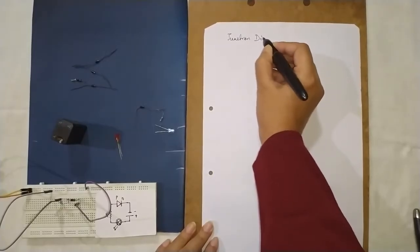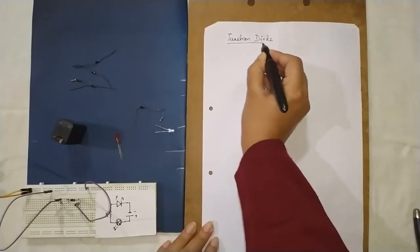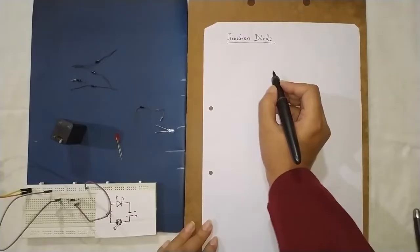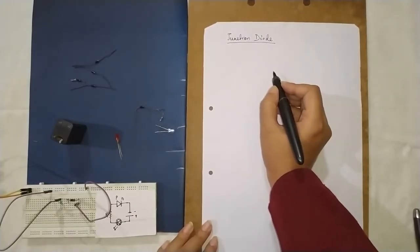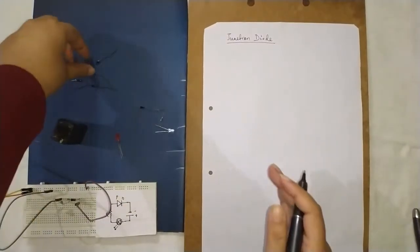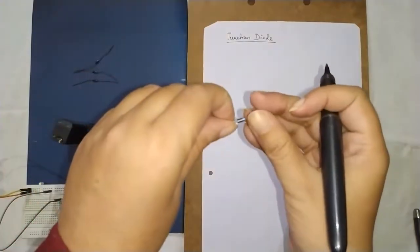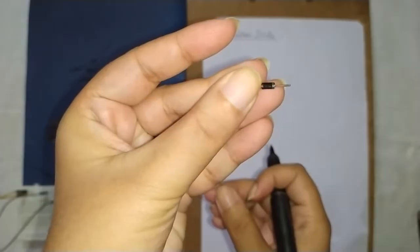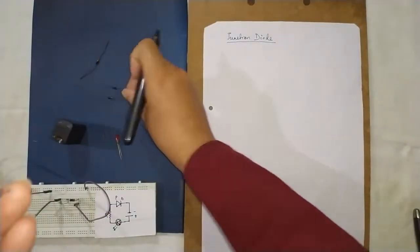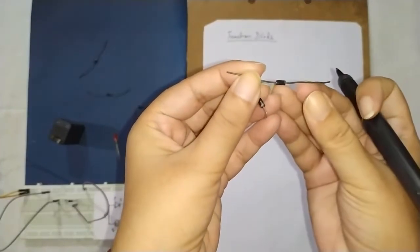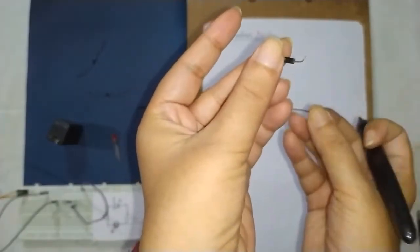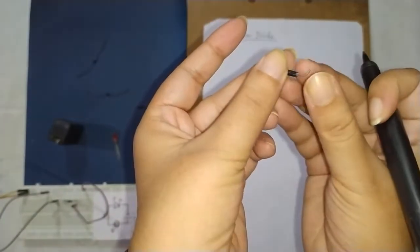So what is a junction diode? The junction diode is nothing but a PN junction having metallic contacts along its two sides. You can see here — this is a junction diode with two metallic contacts along its two sides.